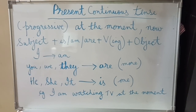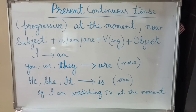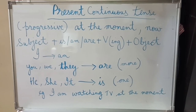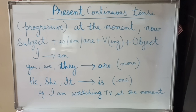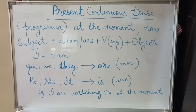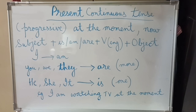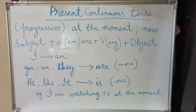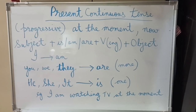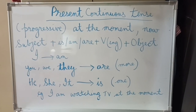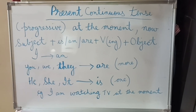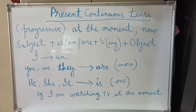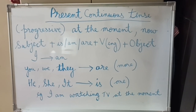A verb is a word that shows an action. The subject is the person who is doing the action. An object is the remaining part of the sentence, excluding the verb and the subject — or in easy words, the item upon which an action is done.